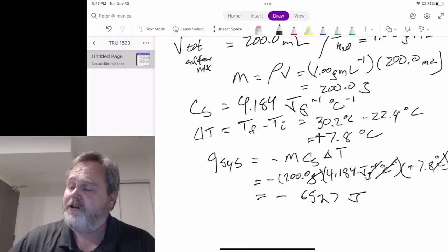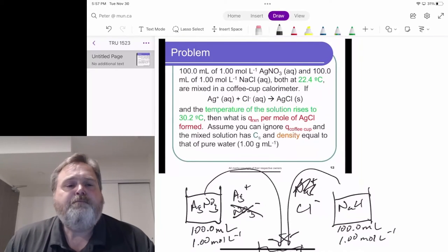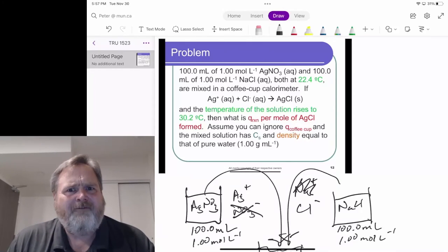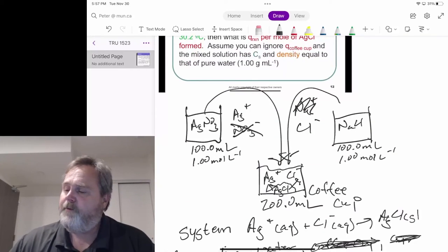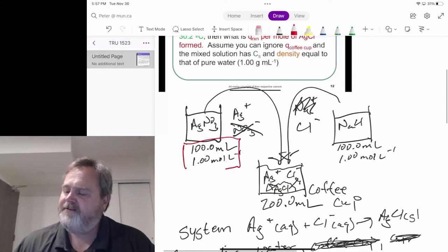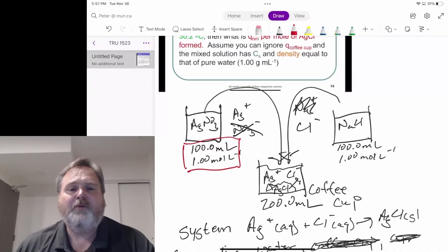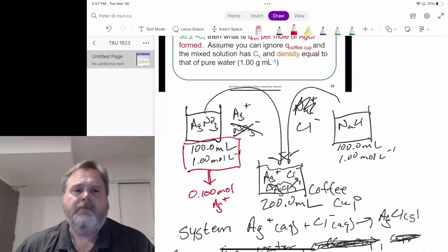We're releasing 6,527 joules of heat, but let's be careful. Let's go back and look at the question. What is Q_reaction per mole of silver chloride formed? So we need to ask ourselves, have we formed a mole of silver chloride? And the answer to that is no.